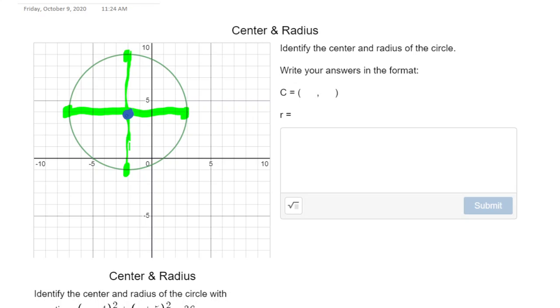So the center of the circle is at negative 2, positive 4. All right, so to find the radius of my circle...